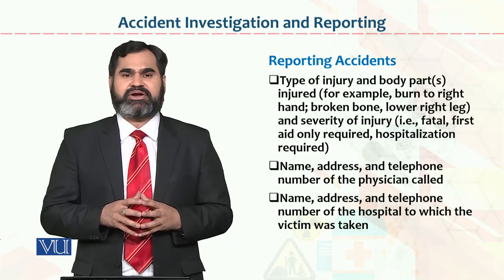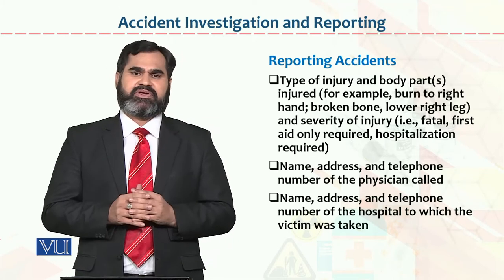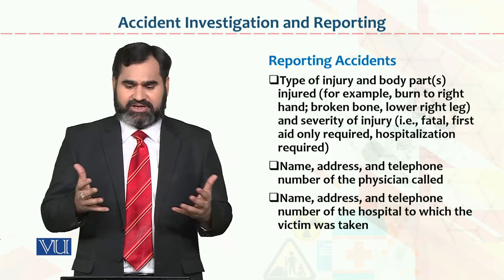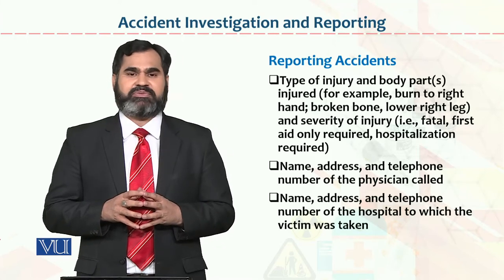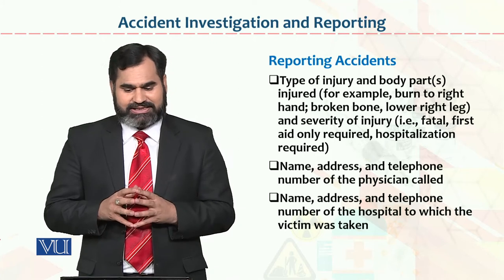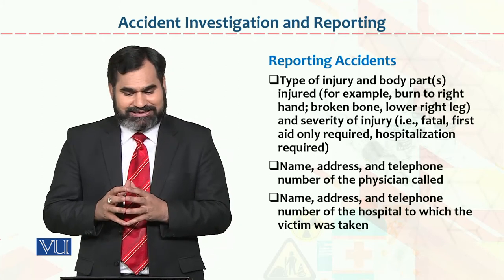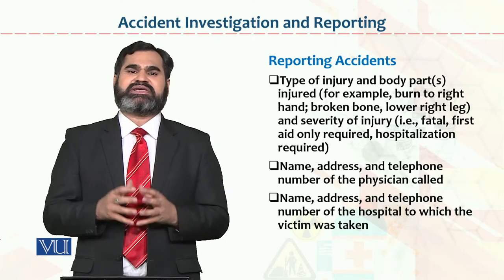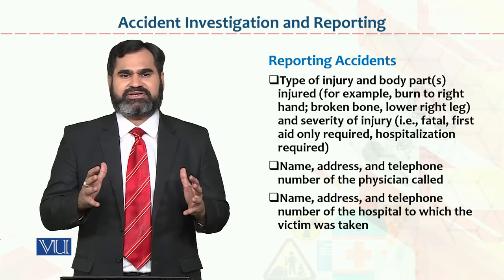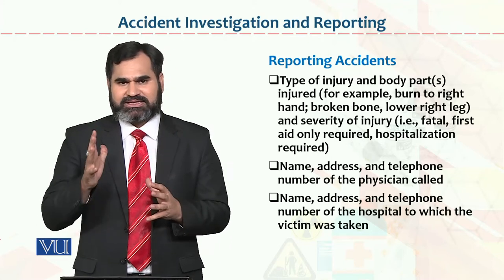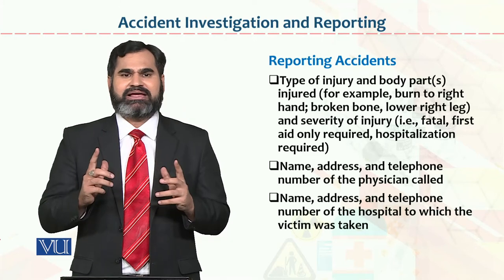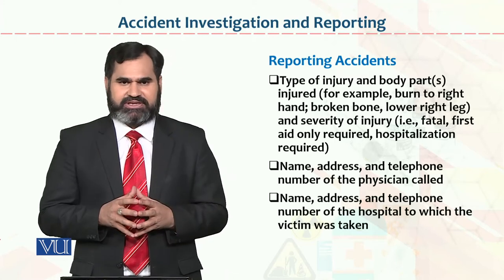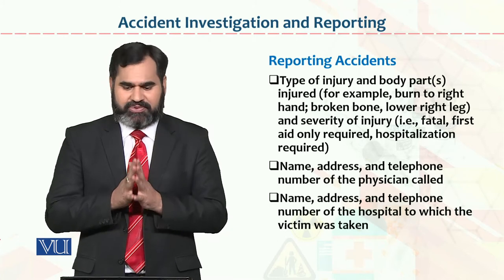Types of injury and body parts — this is a very important point: what kind of injury was it, and which part of the body was affected by the injury? For example: burn to right hand, broken bone, lower right leg. It is noted where the injury occurred — tongue, hand, arm, head, legs, foot? Where did the injury happen? This is reported in the report so we know where the actual problem occurred.